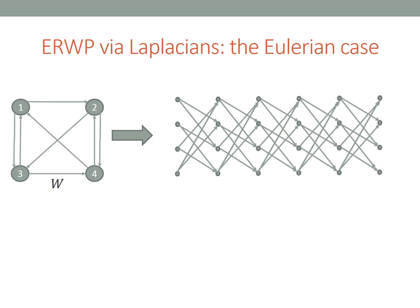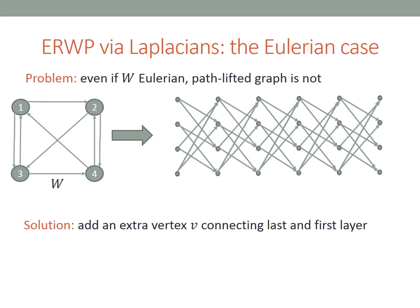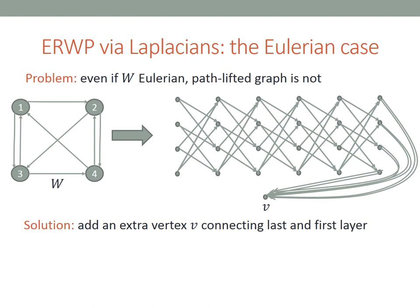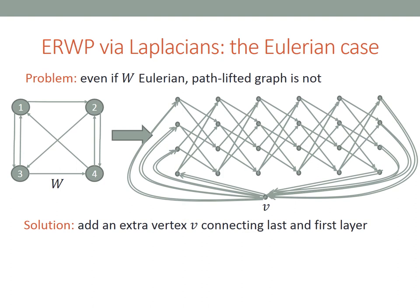However, we can't use this reduction as-is because it does not preserve Eulerianness, and our algorithm for computing the pseudo-inverse of Laplacian matrices only works on Eulerian graphs. Thankfully, there's a relatively simple fix: we add an extra vertex that connects the first and last layer, which makes the graph Eulerian. We add vertex V, connect the last layer to it, and connect V to the first layer. Now the graph is Eulerian and we can apply our Eulerian Laplacian solver.